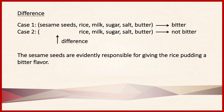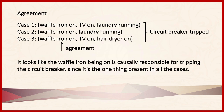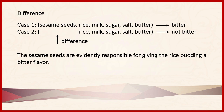By contrast, let's look at the method of difference. We have two cases. In case one, sesame seeds, rice, milk, sugar, salt, and butter are used to make rice pudding, and the result is a bitter taste. In case two, we have all the same ingredients except sesame seeds, and the result is that the rice pudding is not bitter. With method of agreement, the independent variable being tested is present in all cases while others vary. With method of difference, the independent variable being tested differs across cases while all others are held the same. This gives us reason to think sesame seeds are responsible for the bitter flavor.